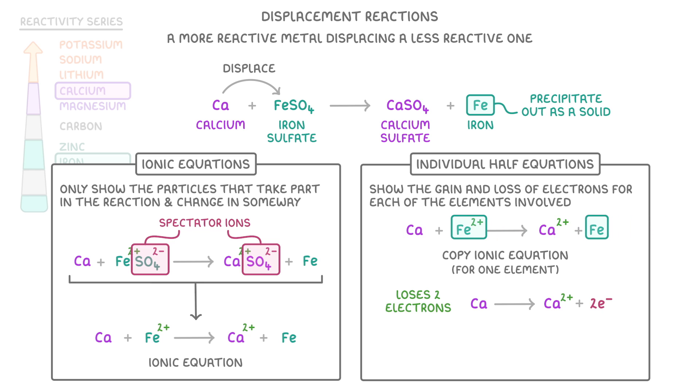Then for iron, we show the Fe 2+ ion going to form an iron atom. And then again, think about our electrons. This time, the iron ion gains two electrons, so we place the two electrons on the left, because they have to combine with the iron ion.